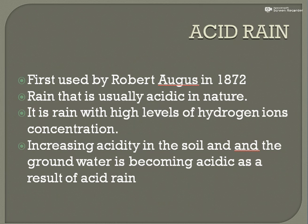Let us learn what is acid rain first. When we have a look at the term acid rain, it was first used by Robert August in the year 1872. As the name says, acid rain — that means the rain that contains acid. We call it acid rain.